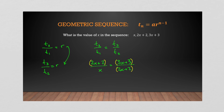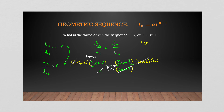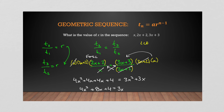Rather than just saying 'cross multiply,' understand that we're multiplying both sides by the lowest common denominator — which is x and (2x + 2). The x cancels on the left and the (2x + 2) cancels on the right, which is effectively why cross multiplication works. Expanding the left side using FOIL gives 4x² + 4x + 4x + 4, and on the right side we distribute x to get 3x² + 3x.